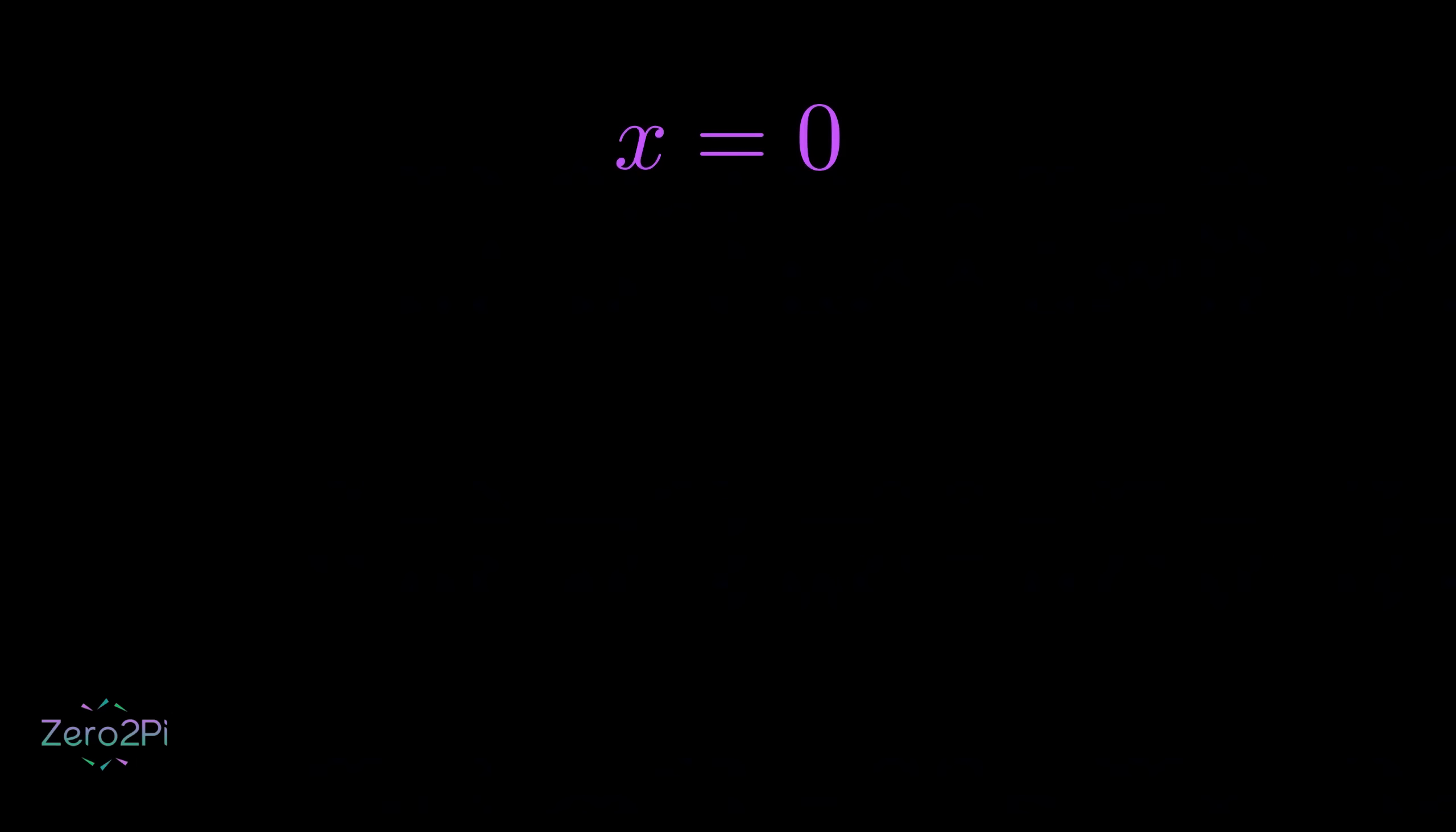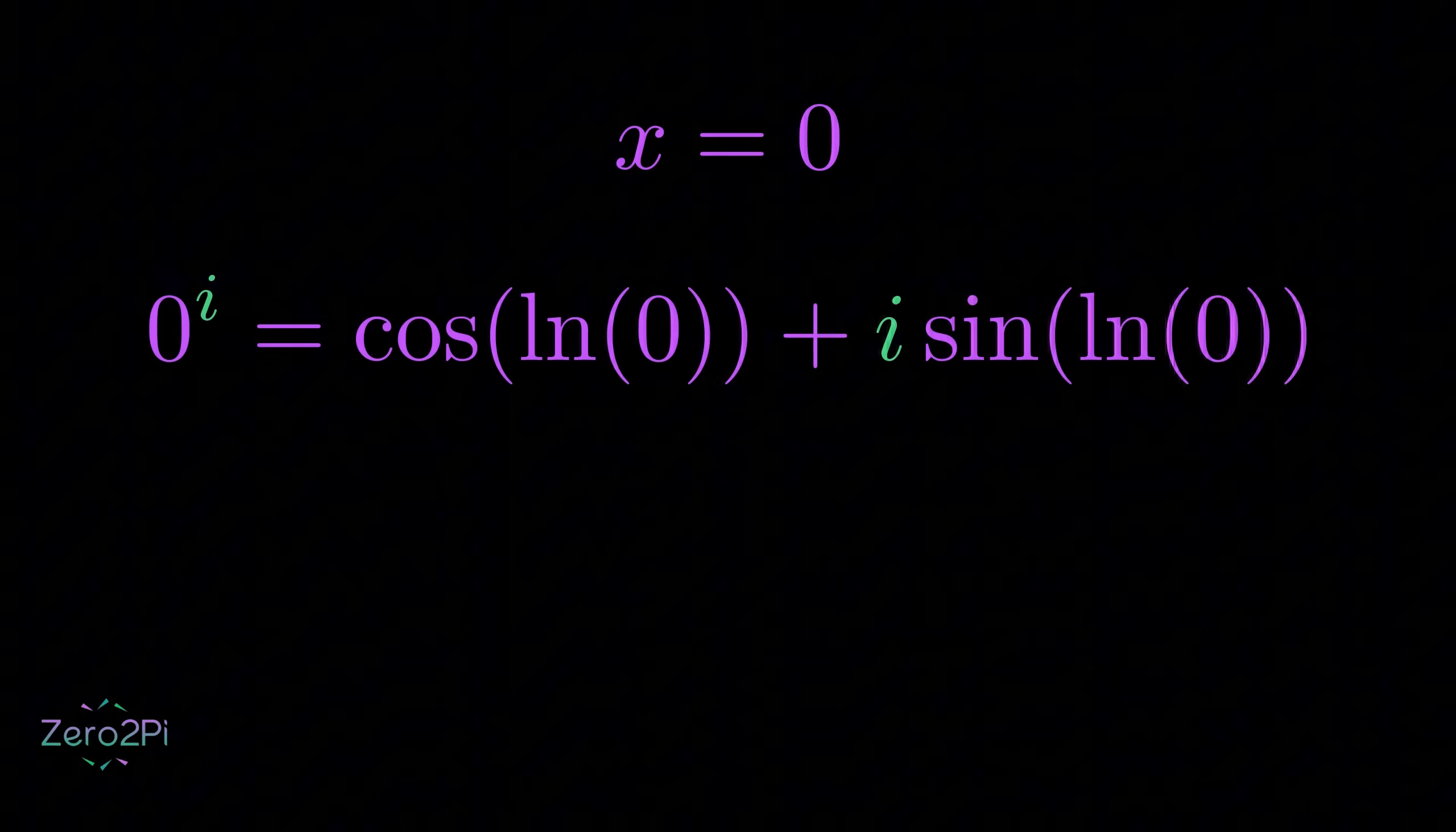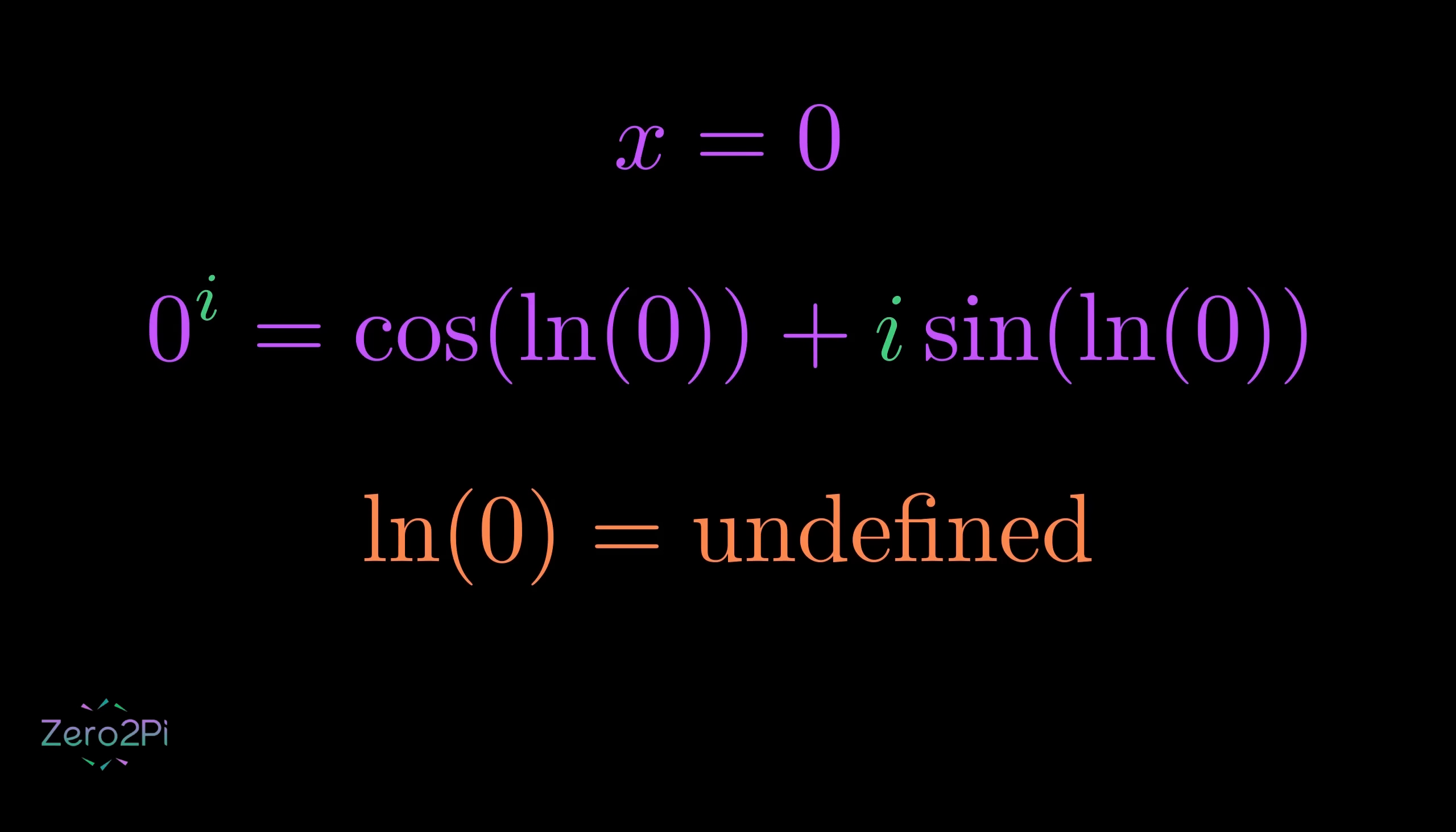Now when we plug zero into the formula directly, we run into a problem, because the natural log of zero isn't defined. In fact, it doesn't exist. So it completely breaks the formula at this point. Let's take a quick look why the natural log of zero is undefined.